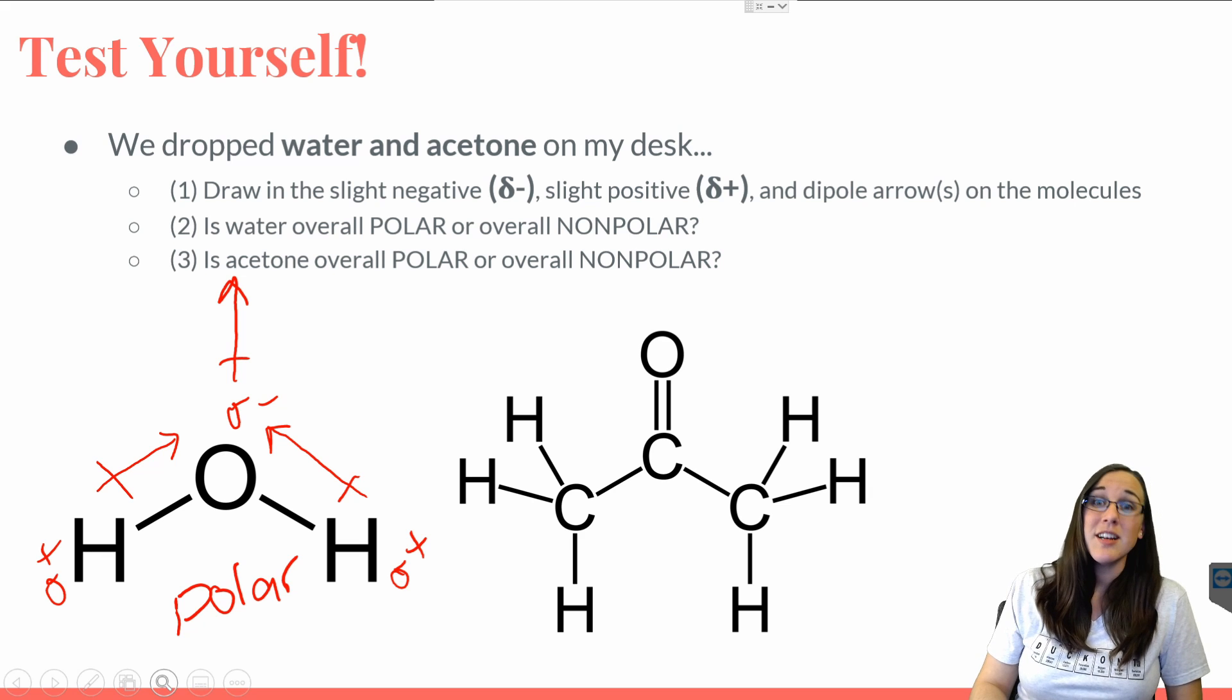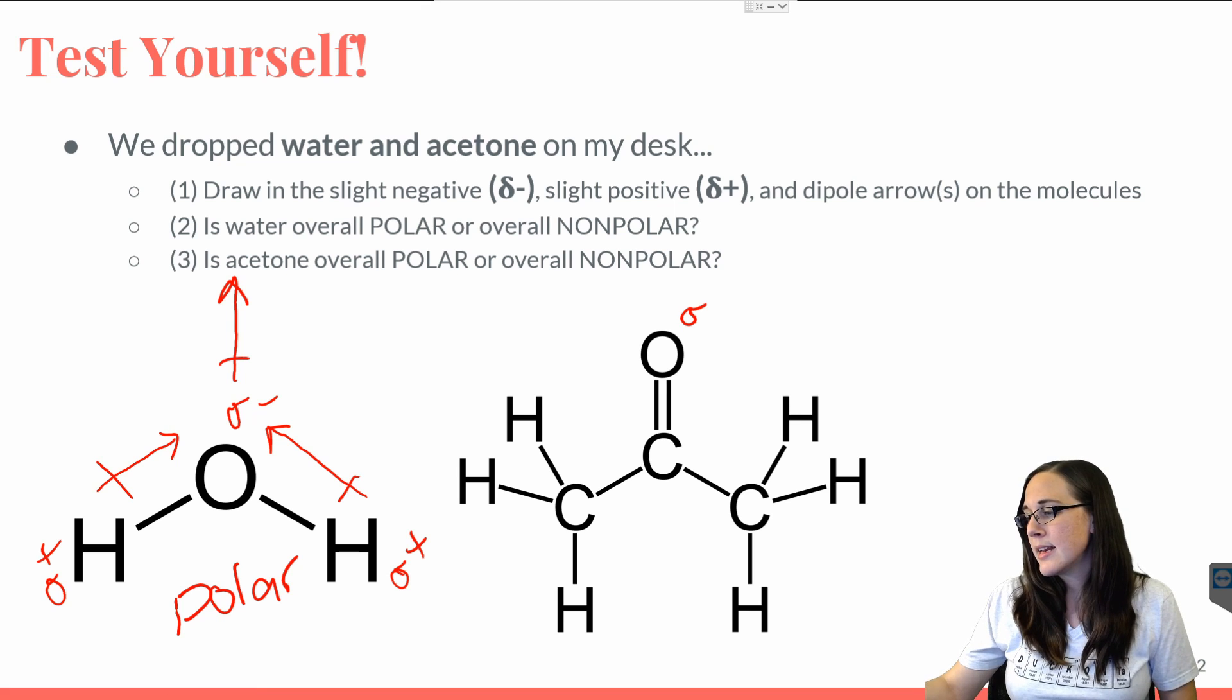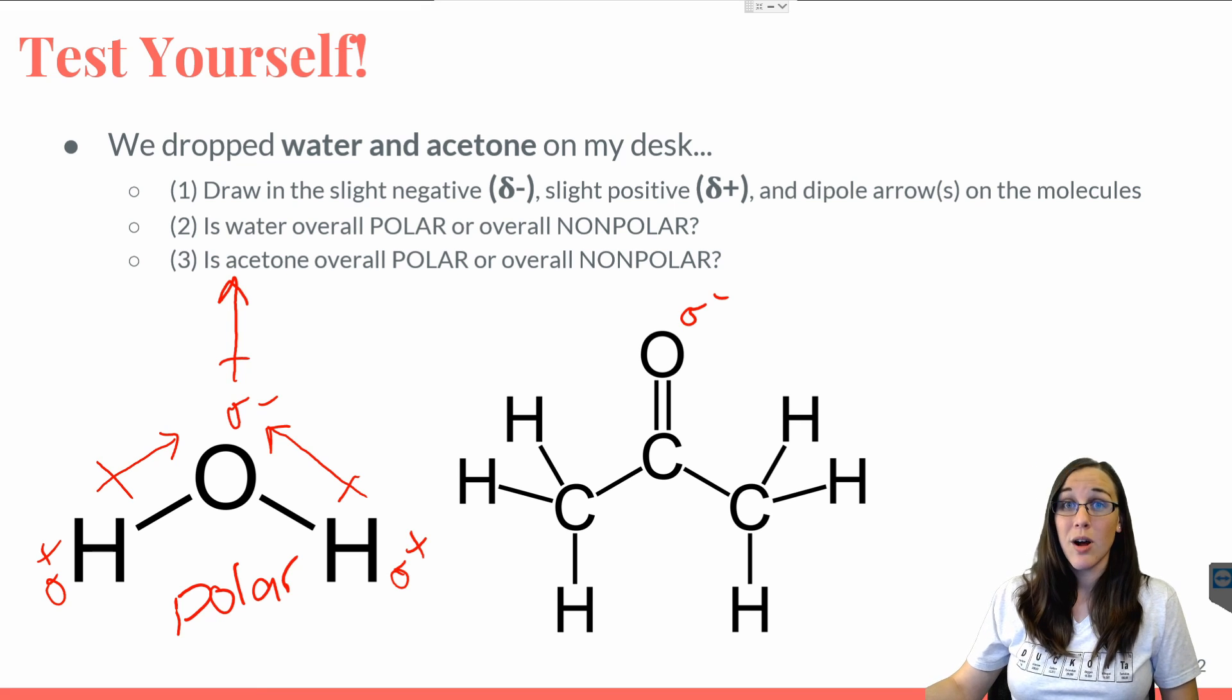Between carbon and oxygen, oxygen is more electronegative according to the periodic table trends, so we're going to put a slightly negative next to oxygen. We're also going to put a slightly positive next to that carbon, since all the electrons are wanting to hang out with oxygen in this bond.